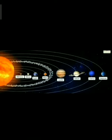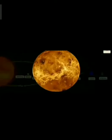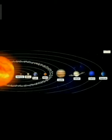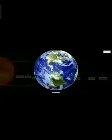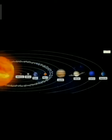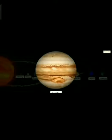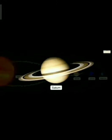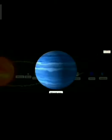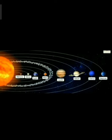Once again, I repeat the names of the planets. First one is Mercury, Venus, Earth, Mars, Jupiter, Saturn, Uranus, Neptune. There are 8 planets in our solar system. You must remember the names of the planets.